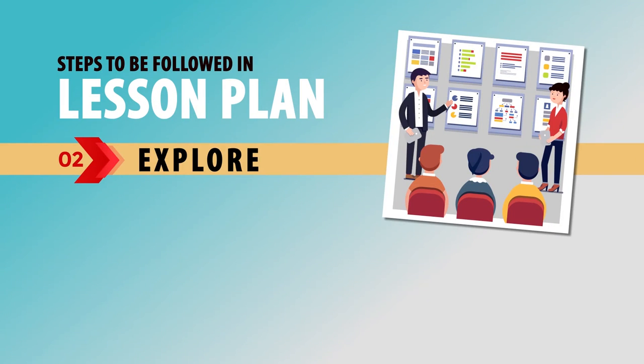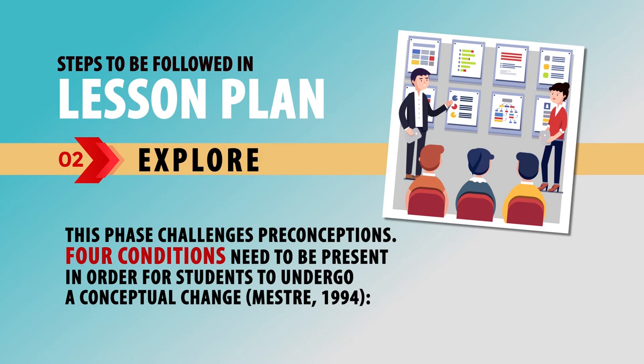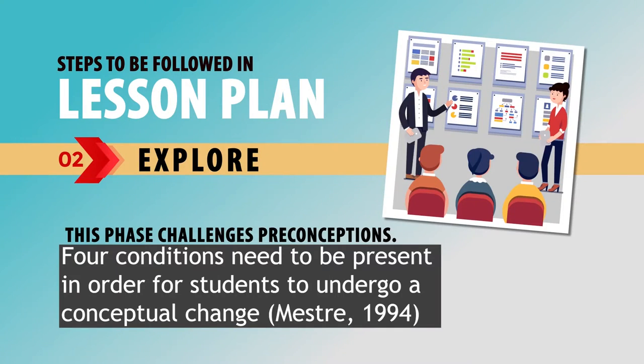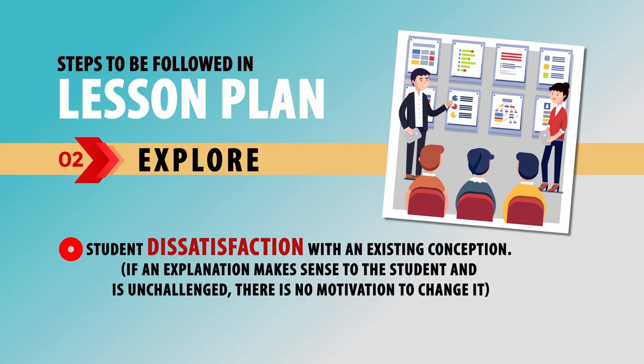The second E is Explore. This phase challenges preconceptions, and this is where metacognition starts — students are made to use their metacognitive skills. Four conditions need to be present for students to undergo a conceptual change. First, students' dissatisfaction with an existing conception — if an explanation makes sense to the student and is unchallenged, there is no motivation to change it. So you have to create situations and discussions wherein their own viewpoints and preconceptions get challenged.